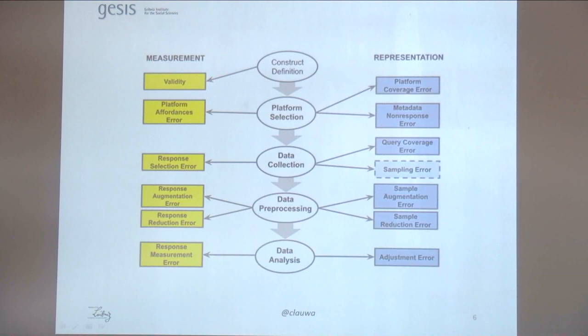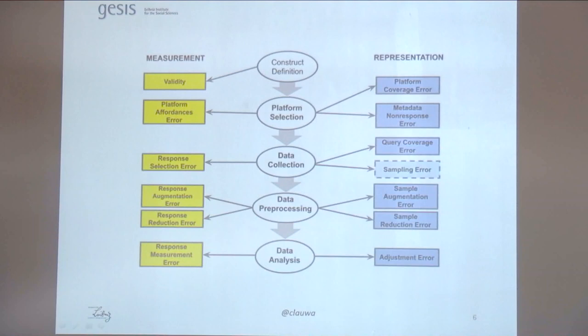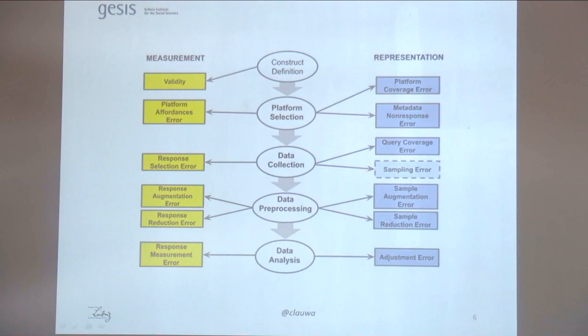When we start the data collection process, we usually make many design choices unless we have access to all data. When working with social media, we often start querying the API and define keywords that presumably capture the construct we are interested in. For example, the SemEval tasks define tasks for stance detection by starting a data collection process using hashtags that people often use to talk about Trump or issues like abortion. If the people using hashtags — a very small fraction — talk differently about these issues than the rest of the population, this introduces query coverage errors.